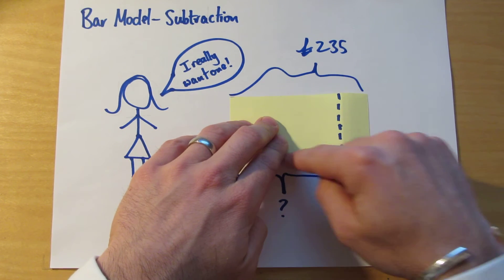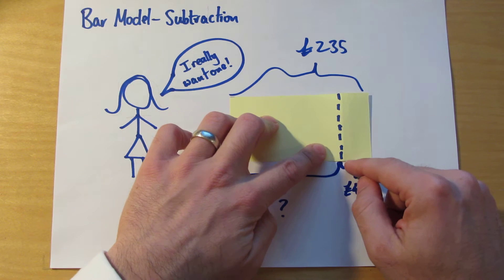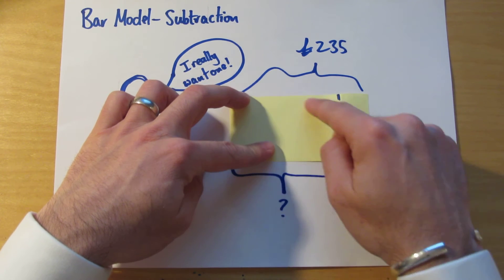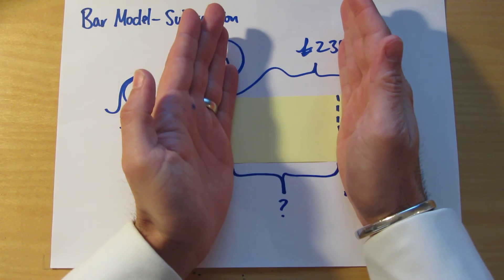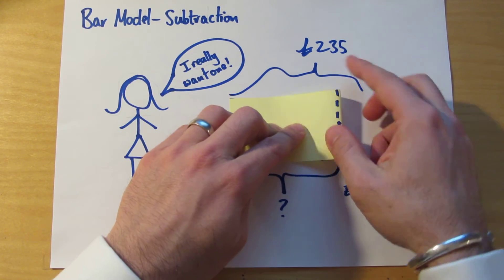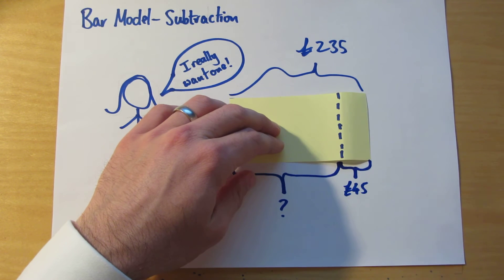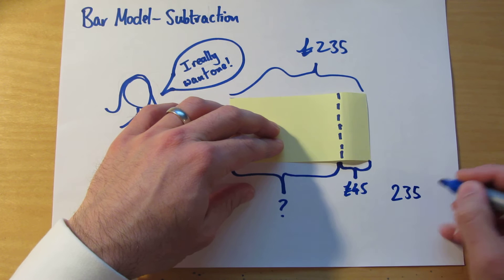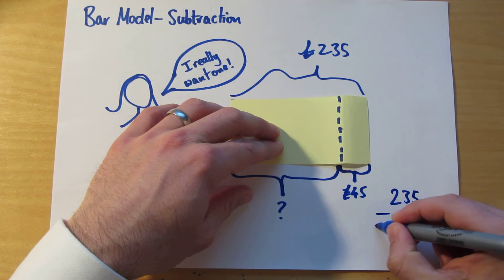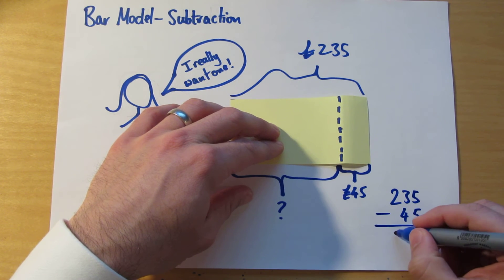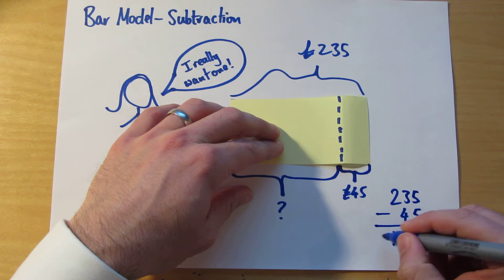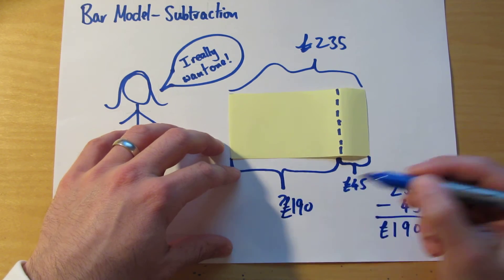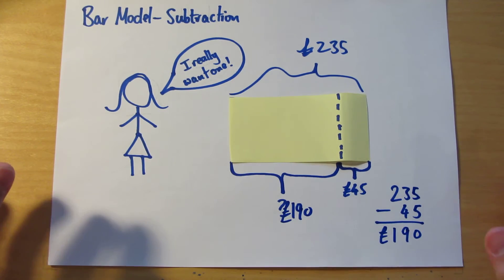The whole thing was £235. She then spent £45. And so, if we're trying to find out this bit, then you can see that we're going to work that out by taking away £45 from £235. So we've got £235, take away £45, and what do you get? £190. So this is £190. Another problem solved.